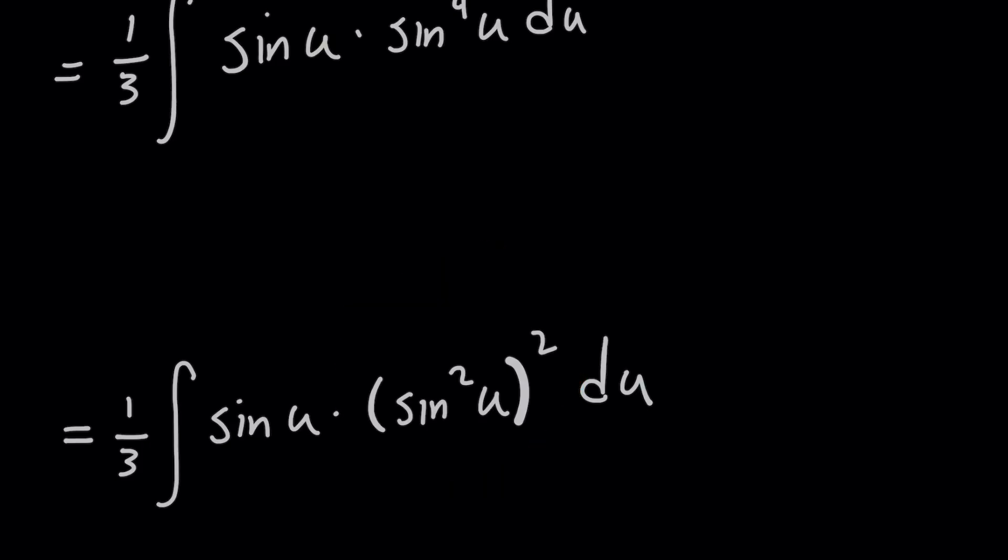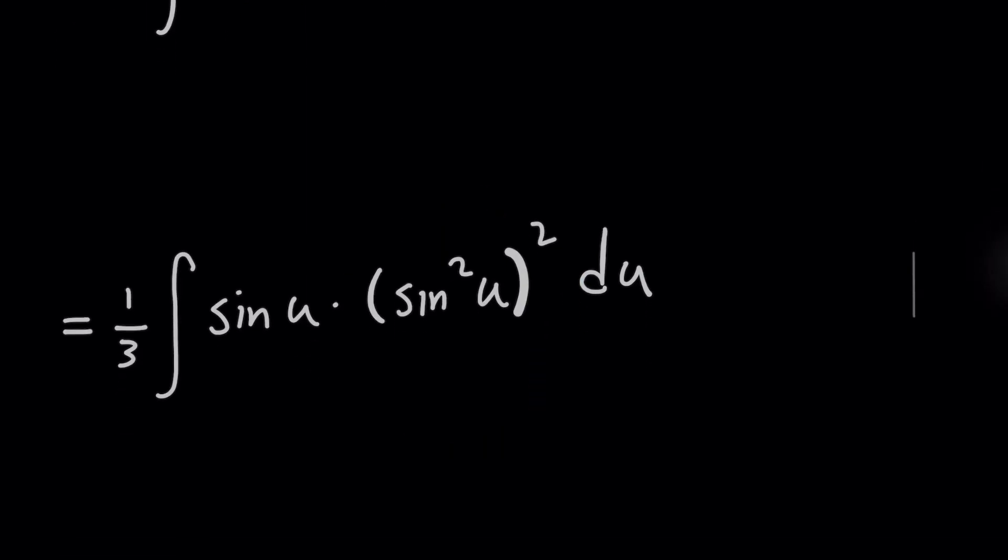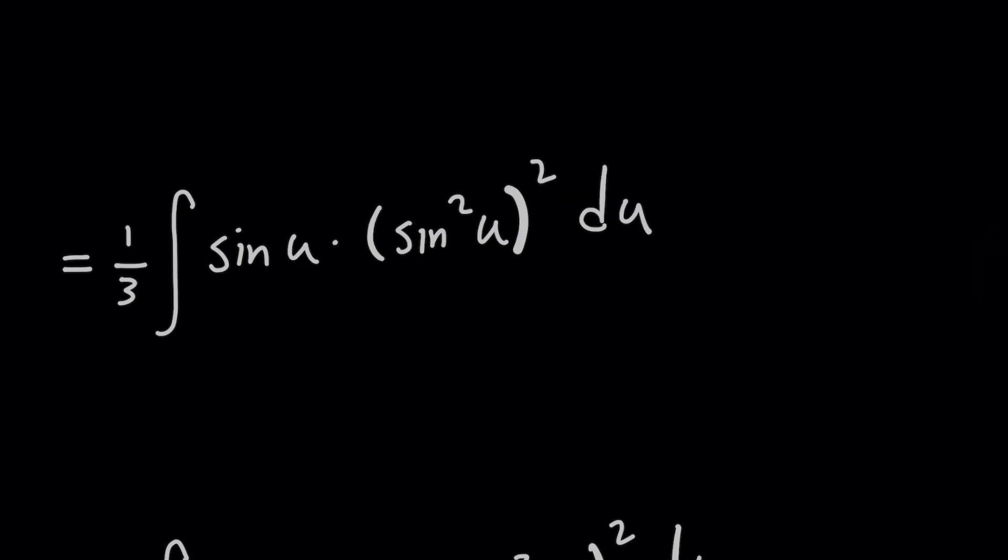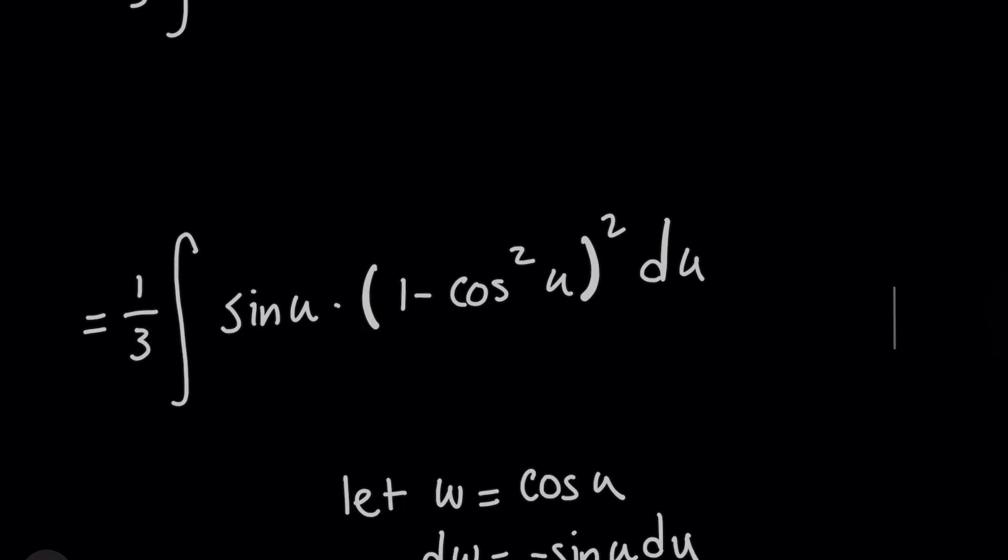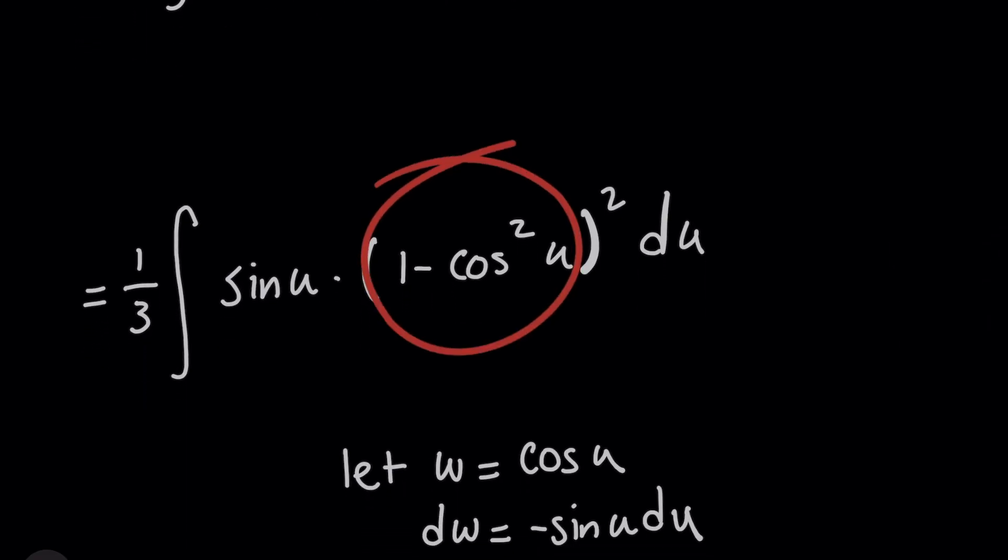So if sine squared of u plus cosine squared of u equals one, and you were to manipulate that equation to solve for sine squared of u, that means that we can replace sine squared of u with this one minus cosine squared of u.